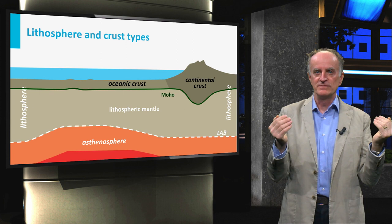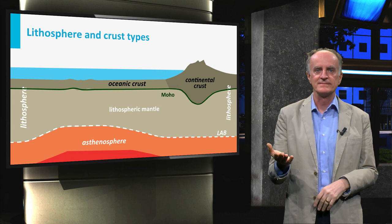Layers above the moho belong to the crust. Two very different types of crust are known, the oceanic crust and the continental crust.